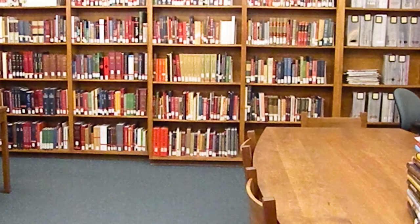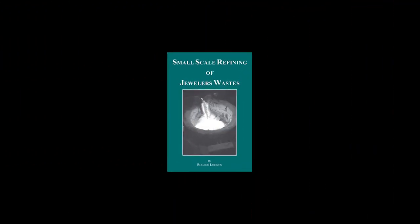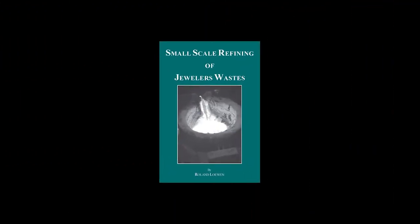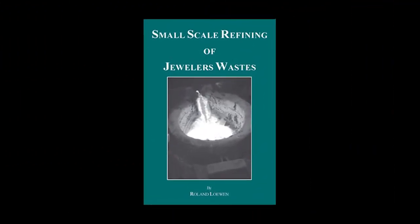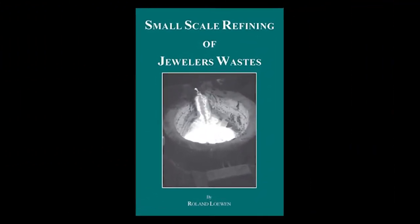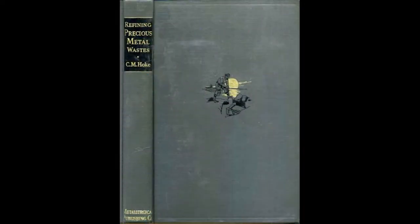Books. There are a couple of good books. The first good book to read is Small Scale Refining of Jewelers Wastes, written by Roland Lewin. The second good book, and probably the most famous — everybody will recommend it — is written by C.M. Morrison Hawke, Refining Precious Metal Wastes.